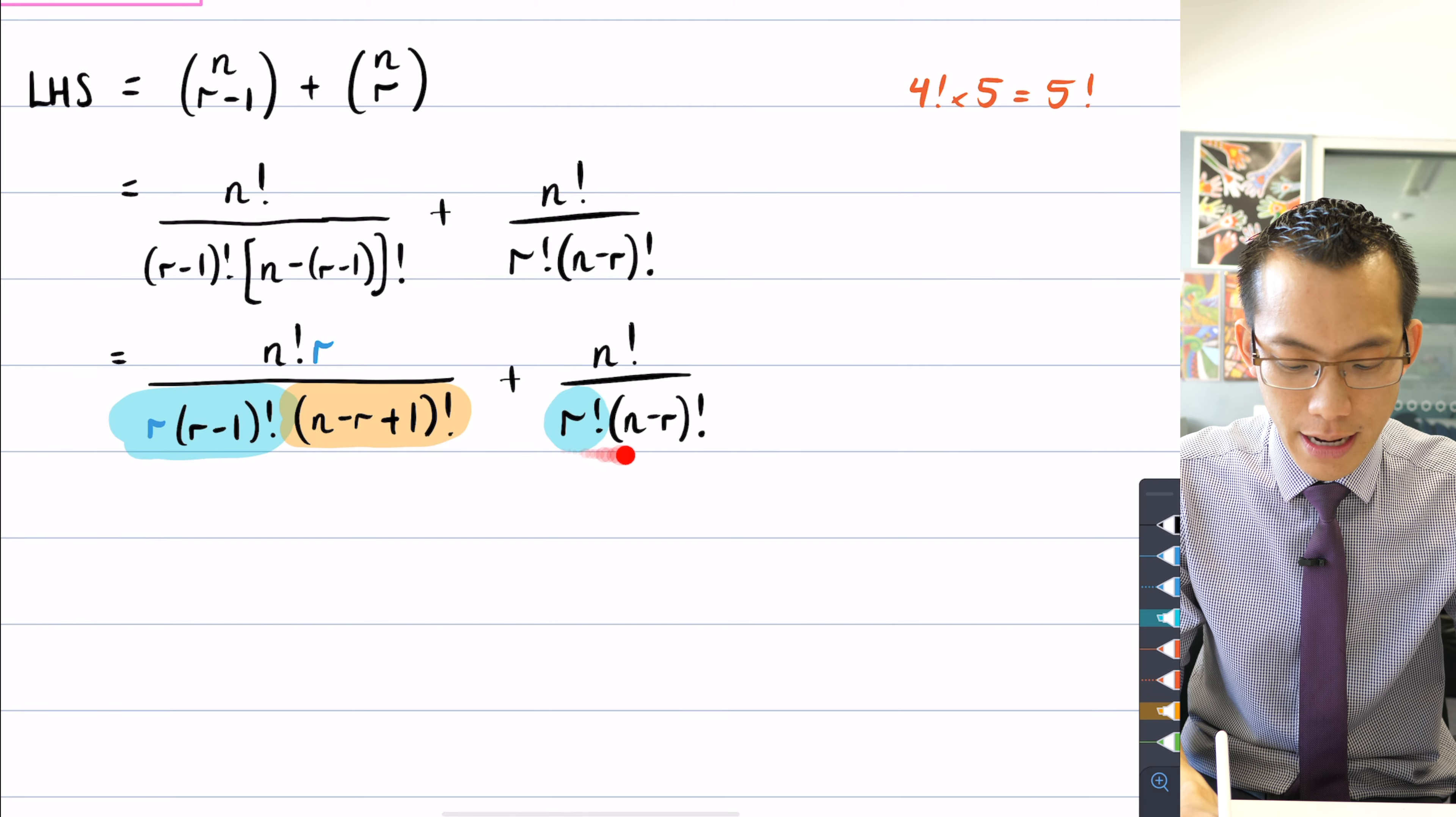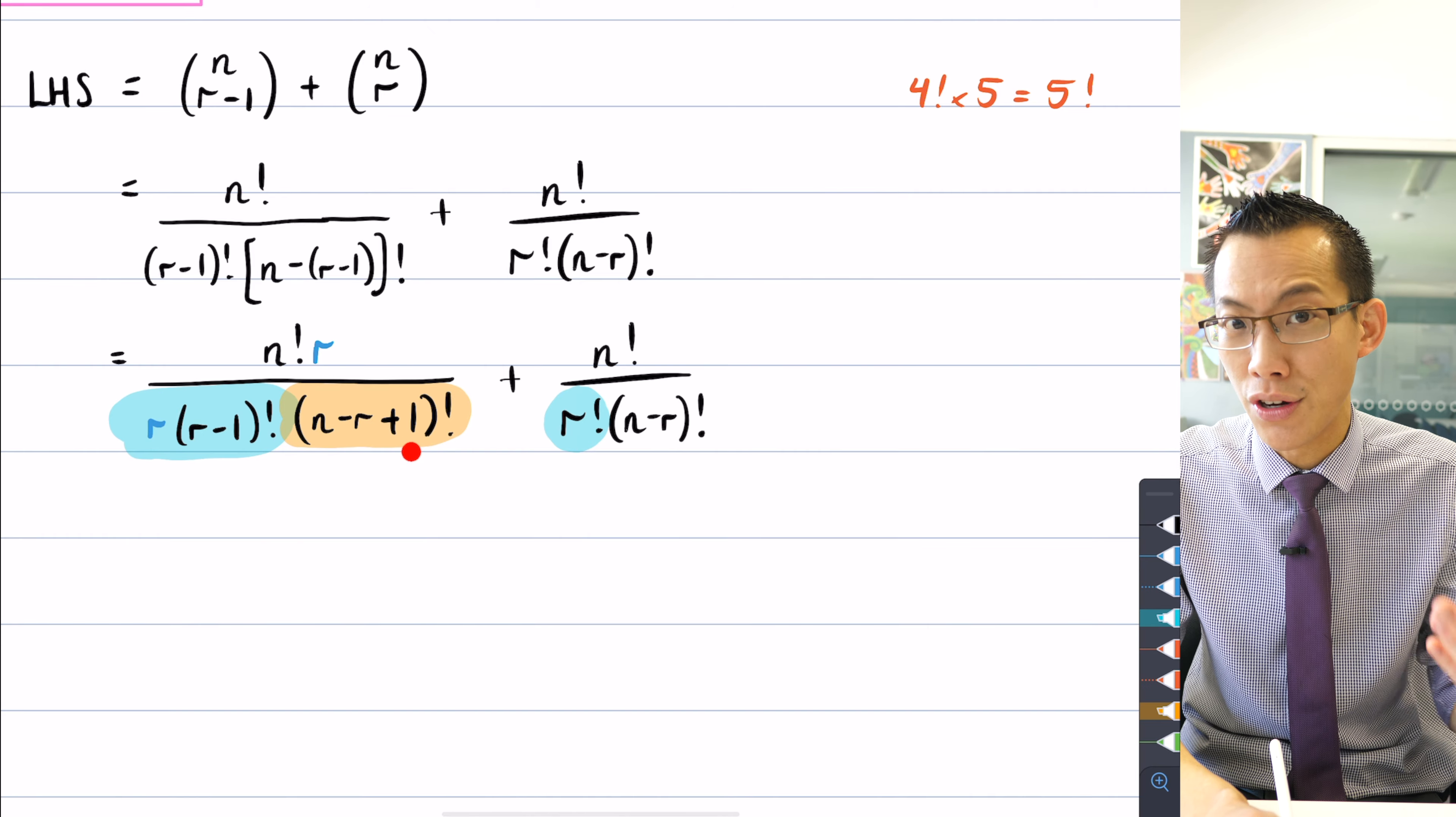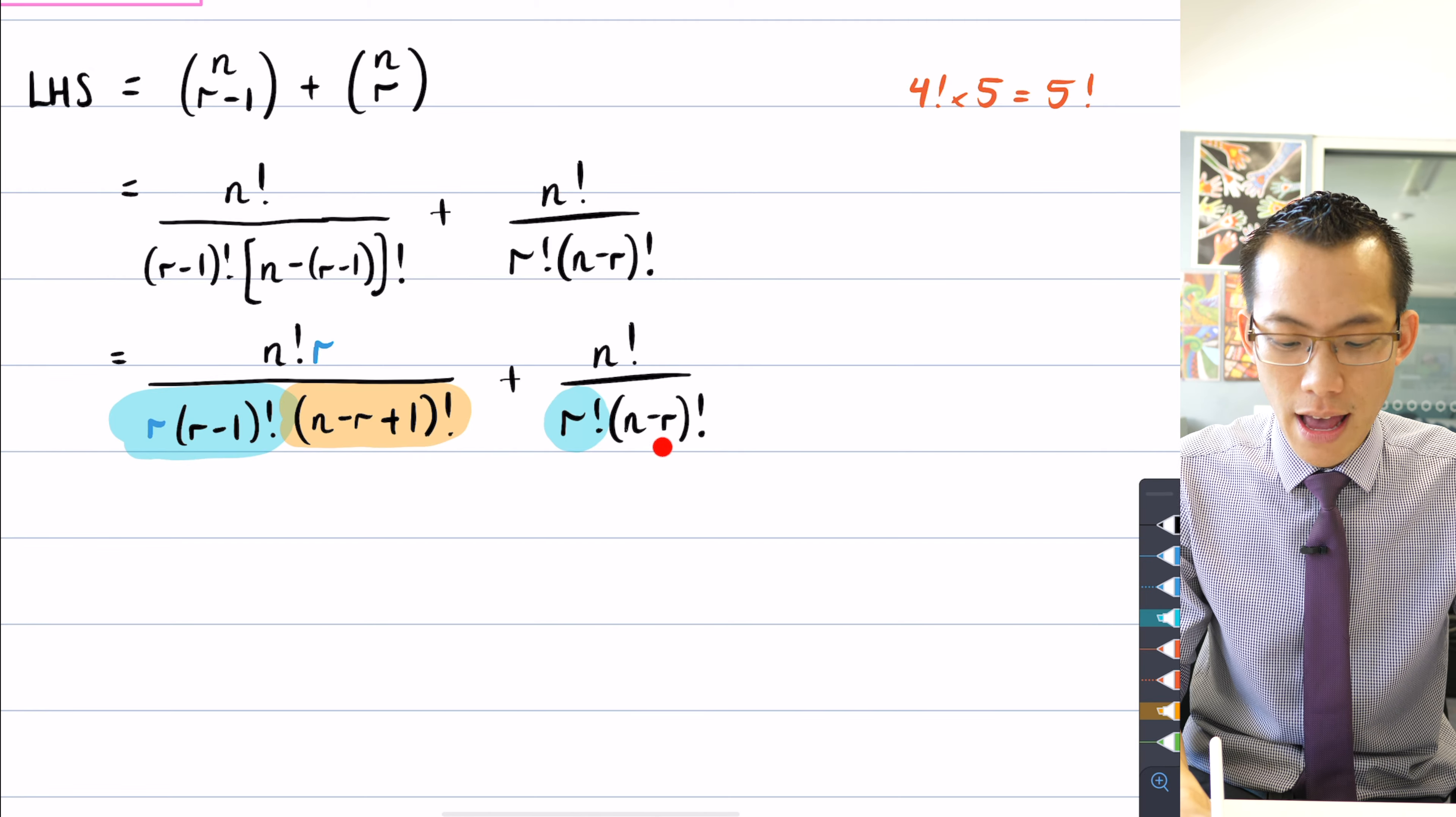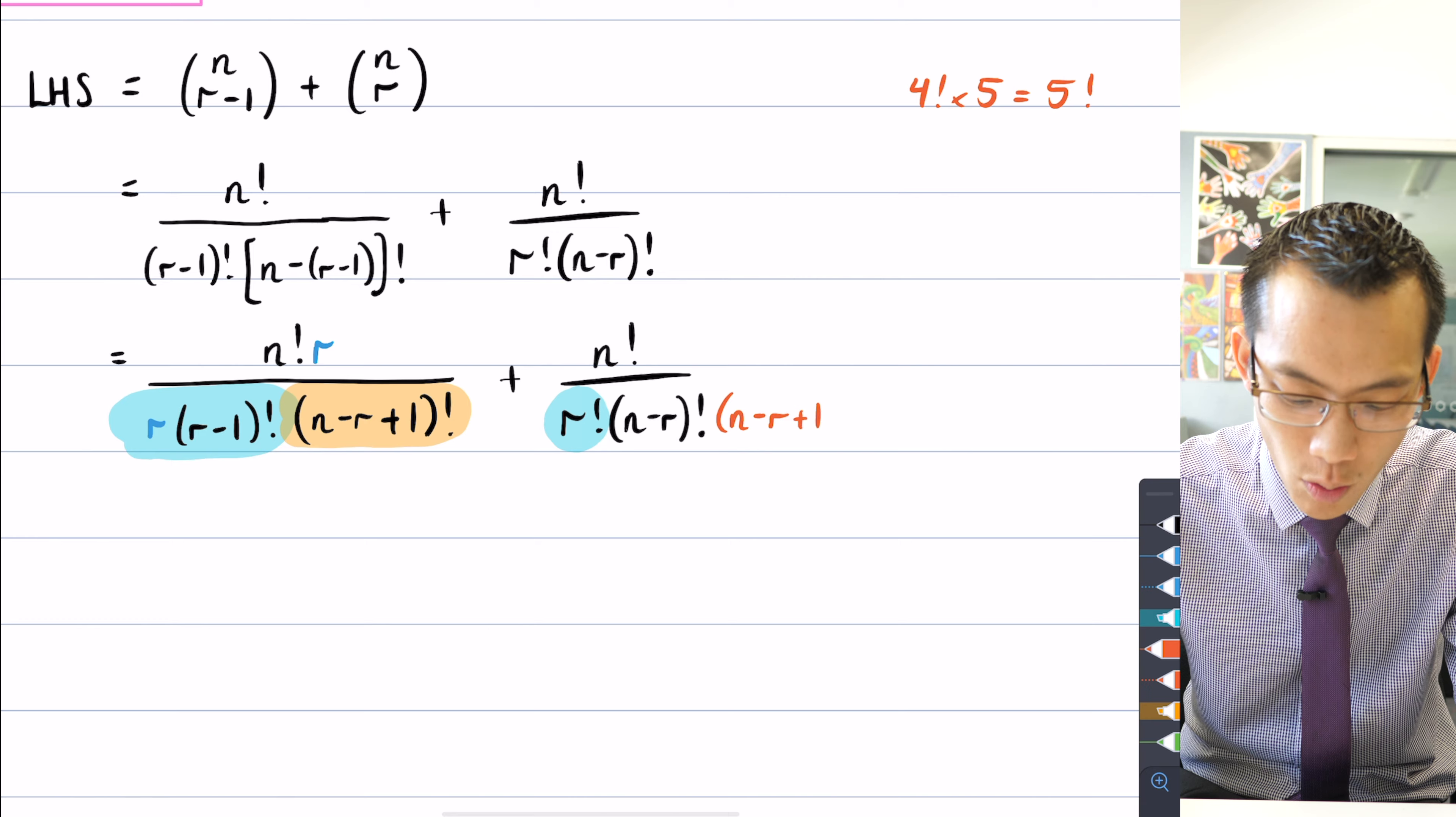you can see there's an n minus r factorial and then this is n minus r plus one. It's just the next term along. It's a four factorial, five factorial situation again. So all I need to do here is multiply by the next term along, and that will give me this denominator. So what is the next term along? It's n minus r plus one.